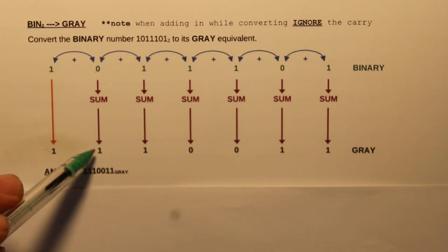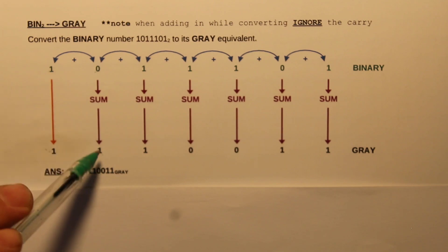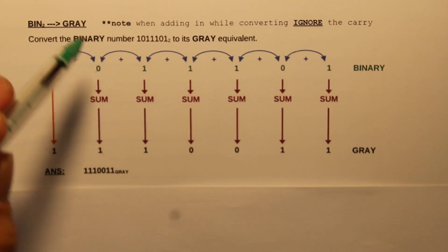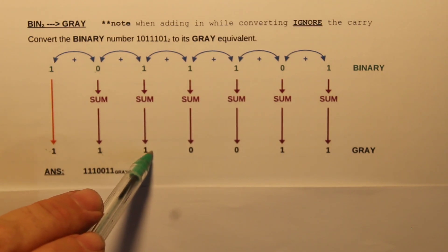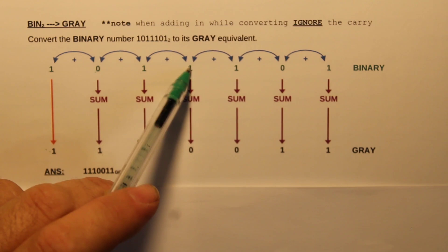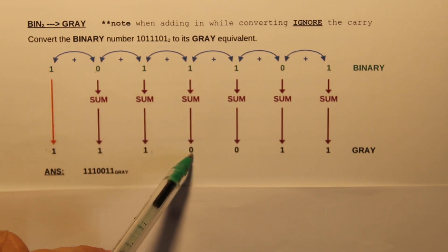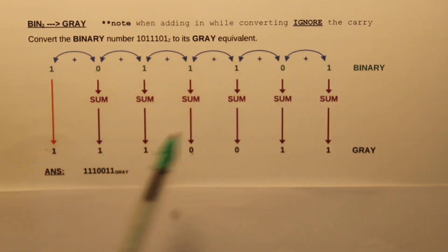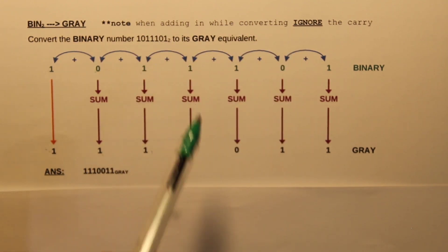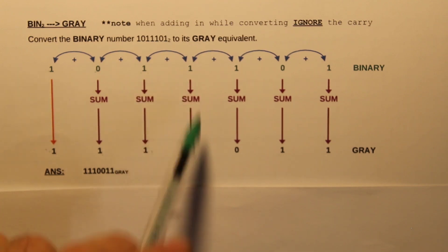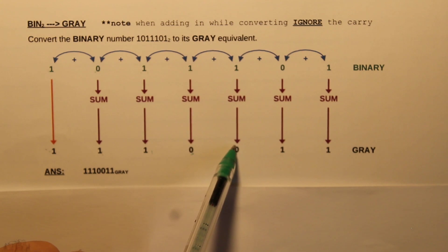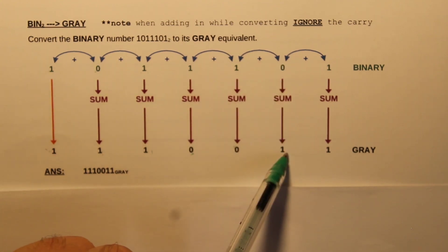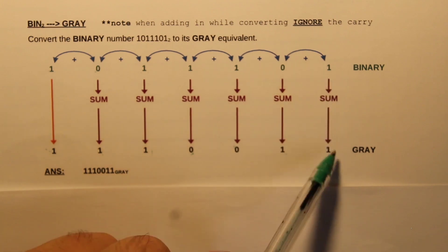One plus zero is one, so we write one. Then zero plus one is one. Then one plus one is zero — and as noted here, when you're adding and you get one plus one, you just ignore the carry, so one plus one is zero.